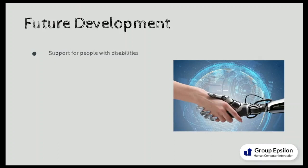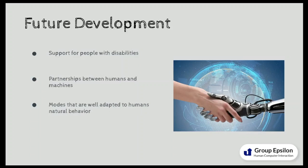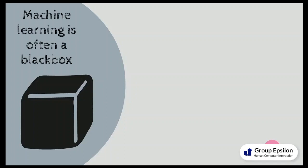In the future, human-AI interaction will most likely be able to provide a plethora of support for people with disabilities. We aim to create a partnership between humans and machines and try to change the modes in a way that they are well adapted to the human's natural behavior. This way, we can integrate AI into everyday life and provide everyone with great help and support in all aspects of their existence. Still, we must keep in mind that there are still many problems faced in AI research today.